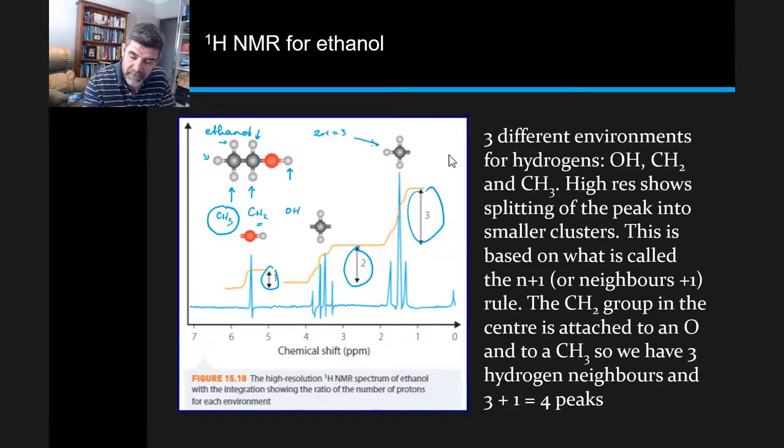So for this particular species here, we have a neighbor that has one, two, three of these little cluster peaks, and therefore must be three minus one, which is two hydrogens.